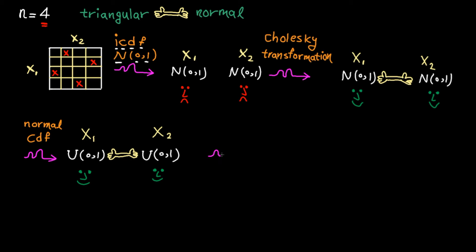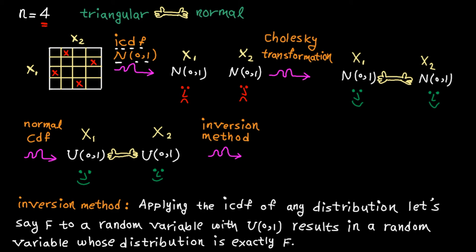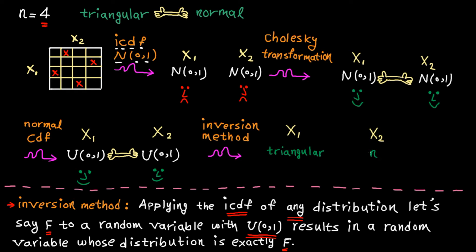The last step is to map the uniform distribution to the ones defined by the user. To do so, I'm going to use the inversion method. Applying the inverse cumulative distribution function of any distribution f to a random variable with uniform distribution between zero and one results in a random variable whose distribution is exactly f. So by applying the inversion method, we get two random variables with triangular and normal distribution. This method preserves the dependency between variables.